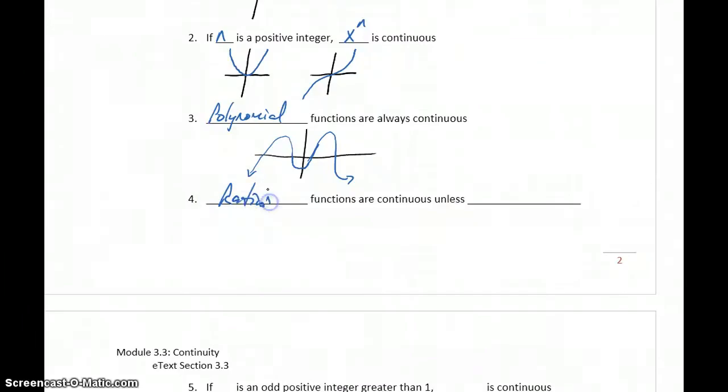Rational functions are continuous unless the denominator is equal to zero. Rational functions will be continuous unless we get zeros in the denominator, which can either indicate a vertical asymptote or a hole in the graph. If we're dealing with polynomial functions, they're always continuous. If we're dealing with rational functions, we need to consider the denominator where that's equal to zero. There are going to be points of discontinuity.